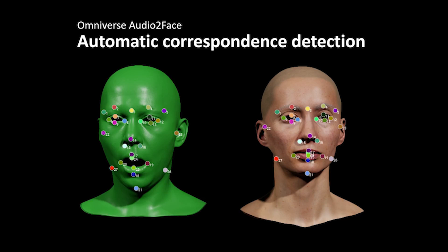In our character transfer workflow, one of the necessary tasks is the correspondence tagging. The process is often time consuming and some users find this process difficult because they are not sure where to place the markers to get the best transfer result. So we provide this automatic correspondence detection feature, which makes the process a lot easier and faster.